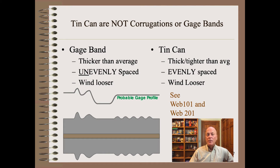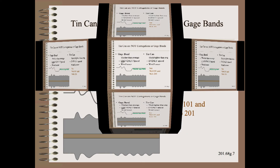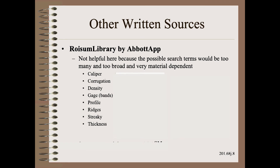A final note: tin cans commonly found on film are not corrugations, and they are not gauge bands. See my Web 101 class or my Web 201 clips for more information on the tin can defect, as well as the many ways to measure or infer profile variations. Finding more information about the general class of profile-related defects, such as ridges, valleys, and corrugations, will be exceedingly challenging, even with resources such as the Roycem Library database.